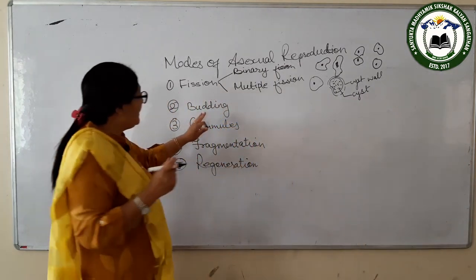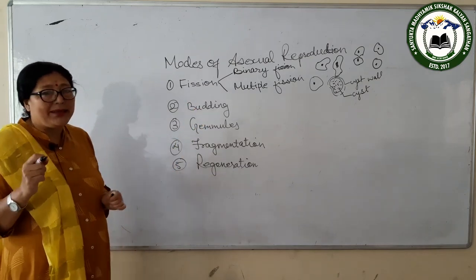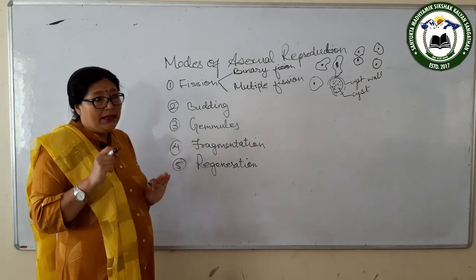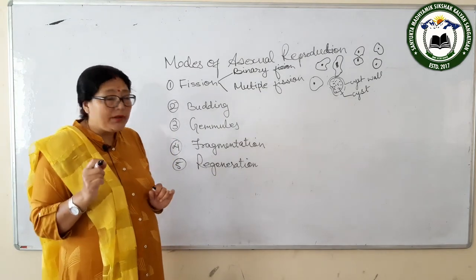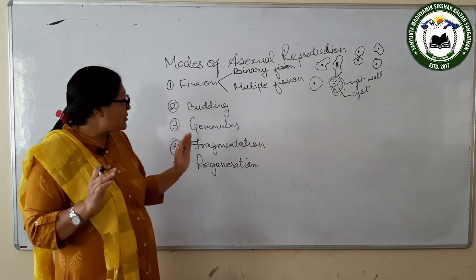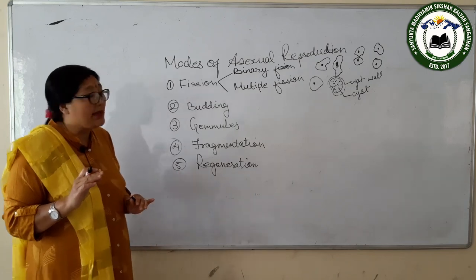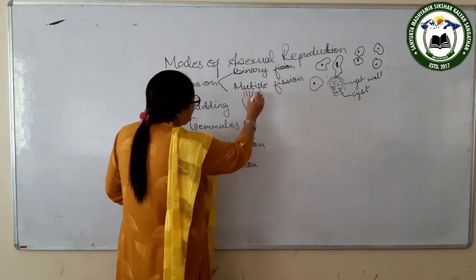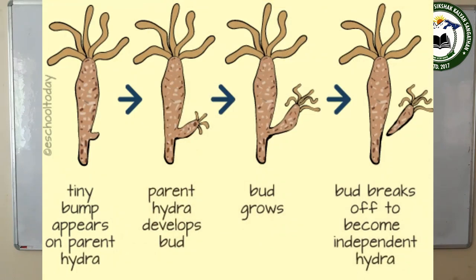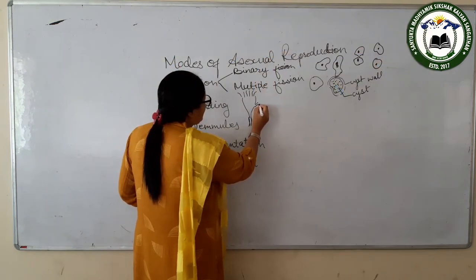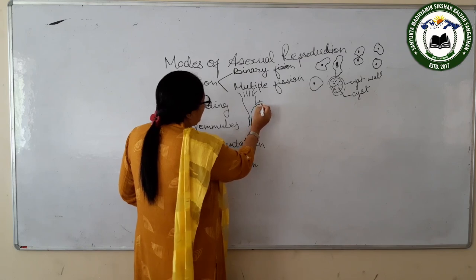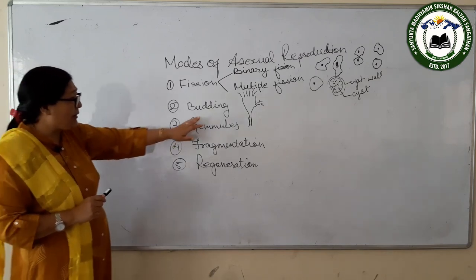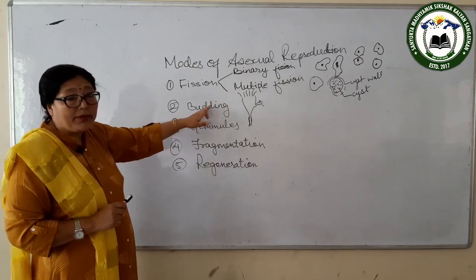The second mode is budding. In budding, a small bud appears on the parent body, detaches from the parent body, and develops into a new individual. Examples include Hydra and yeast.